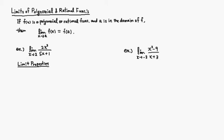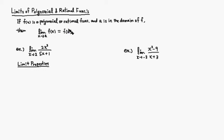Let's look at the limits of polynomial and rational functions. Here is a useful result: if f(x) is a polynomial function or a rational function, and a is in the domain of the function, then the limit of f(x) as x approaches a is equal to f(a). So you can just plug in the value and evaluate the function.